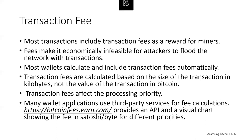Transaction fees are calculated based on the size of the transaction in kilobytes, not the value of the transactions in Bitcoin, which means you can have a very large transaction with not much in the way of fees. Transaction fees are set by market forces within the Bitcoin network. Miners prioritize transactions based on many criteria including fees, and might even process transactions for free under certain circumstances. A transaction with sufficient fees is likely to be included in the next block, while one with insufficient or no fees might be delayed or not processed at all. Transaction fees are not mandatory, but including them encourages priority processing.